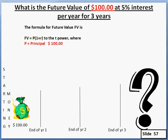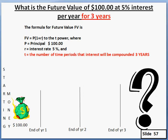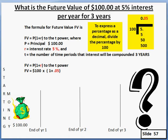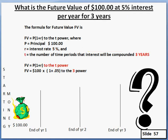The principal P is $100, the interest rate R is 5%, and T, the number of time periods, will be 3 years in this case. Plugging in the values: for P we put in $100, multiplied by the quantity (1 plus R), where R expressed as a decimal is 0.05, and then we raise that quantity (1 + 0.05) to the third power. Going inside the parenthesis, we add 1 and 0.05, and we get the answer 1.05.